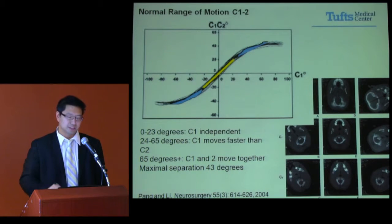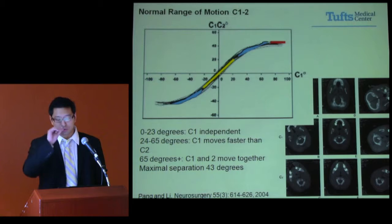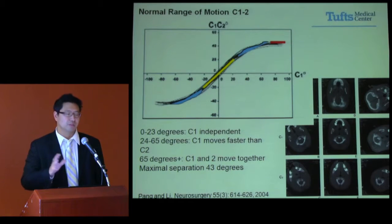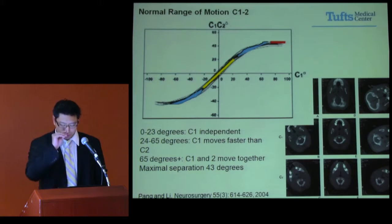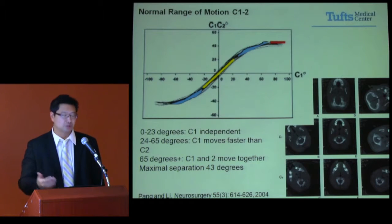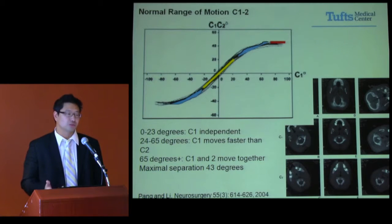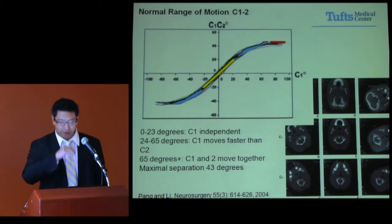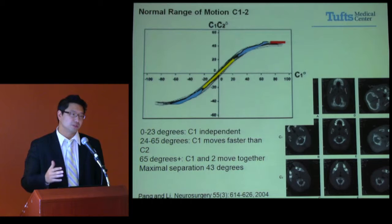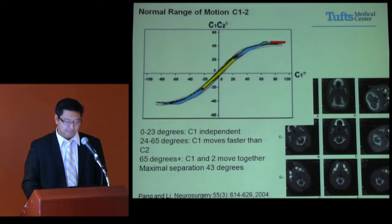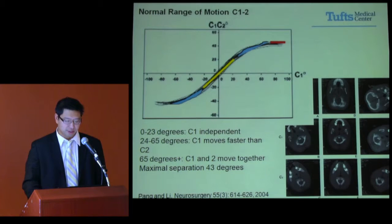Around 65 degrees it kind of plateaus — C1 and C2 no longer move independently; they move together. Presumably, in hypermobility patients you'll have a different range. His study was actually focused on rotary fixation, studying patients that had a lack of movement, so they were stuck together. But that's fairly the range of normal he described.